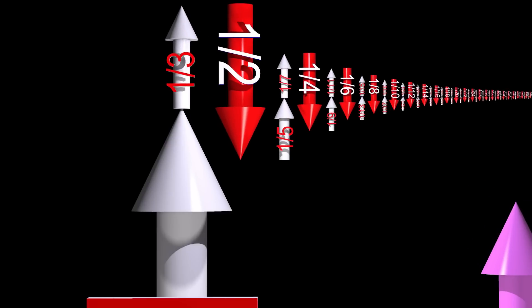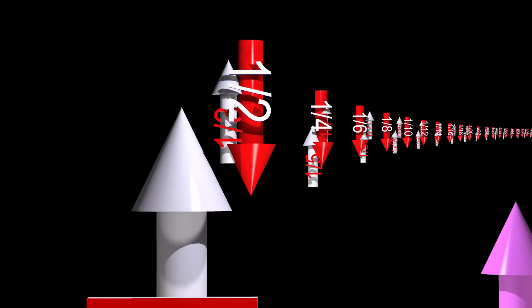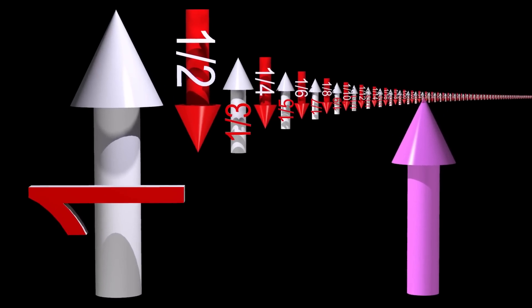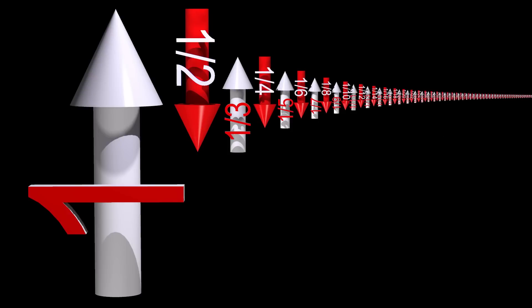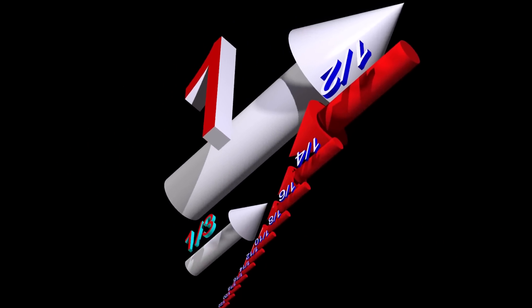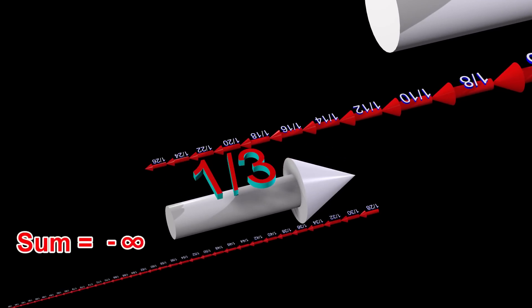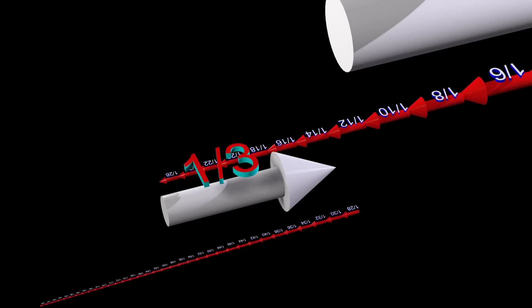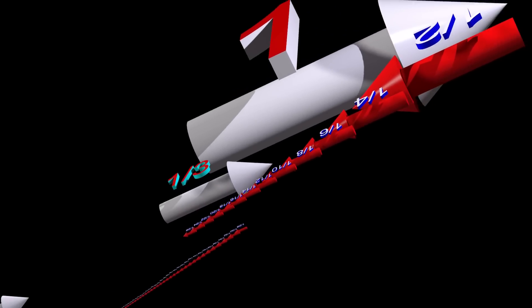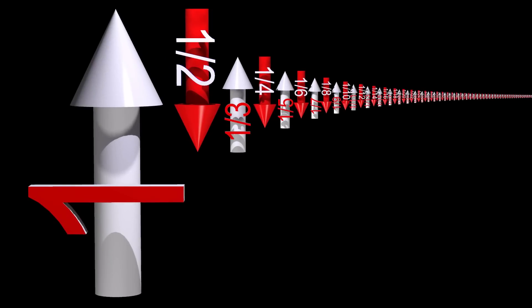If it happens to be possible to arrange these numbers in a way that results in a finite sum, then it is also possible to rearrange these numbers so that we get any sum we desire. And it is also possible to rearrange these numbers so that the sum approaches positive or negative infinity. The fact that infinite sequences can have such bizarre behavior has led some philosophers to conclude that infinity is a concept that can only exist in mathematics and not in the actual physical world.